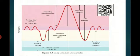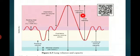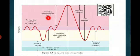Next we move to capacities. Capacity is the combined volume of air from multiple respiratory volumes. The first one is inspiratory capacity (IC) — the total volume of air a person can inhale after normal respiration. Its value is calculated by adding tidal volume (500 milliliter) and inspiratory reserve volume (2500 to 3000 milliliter).